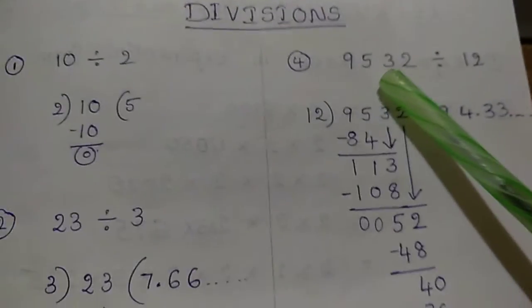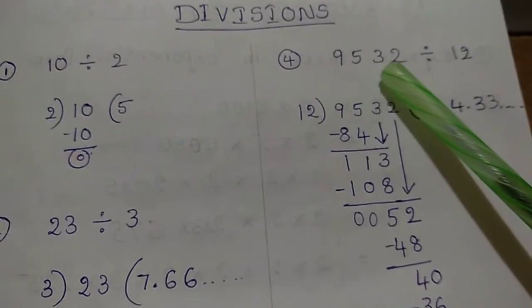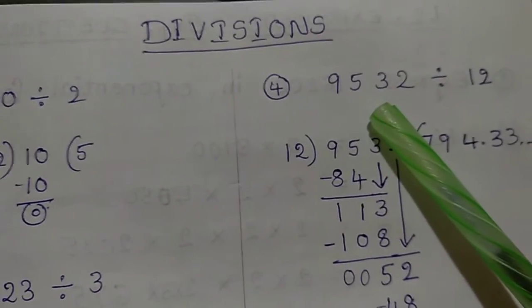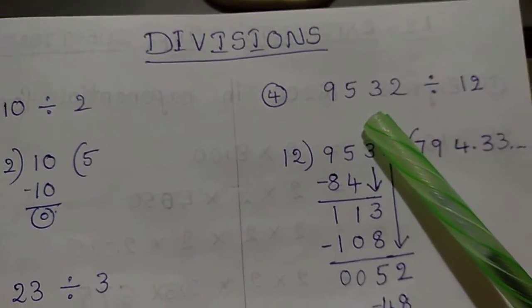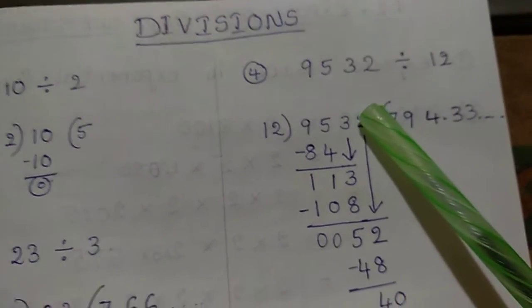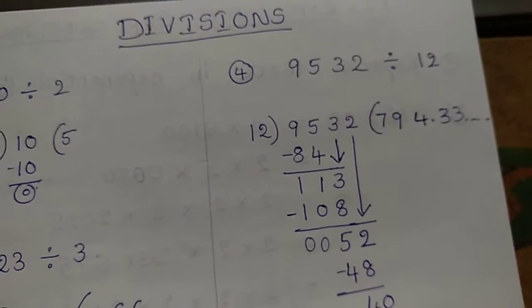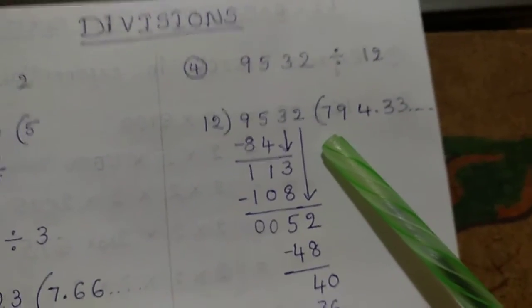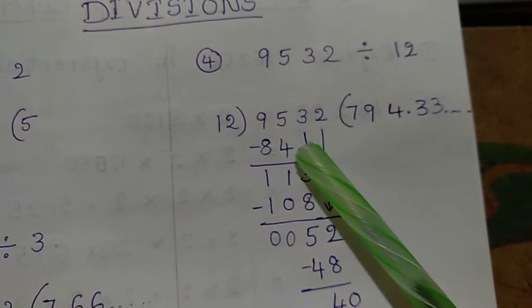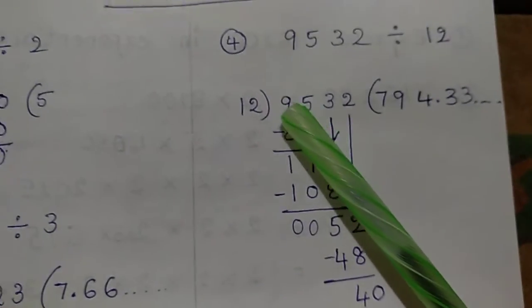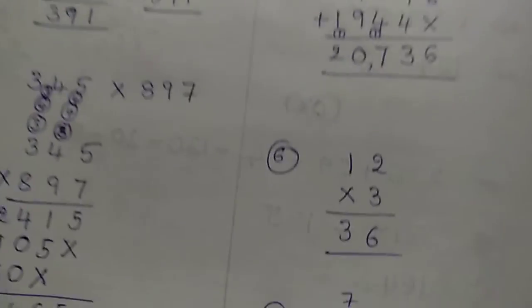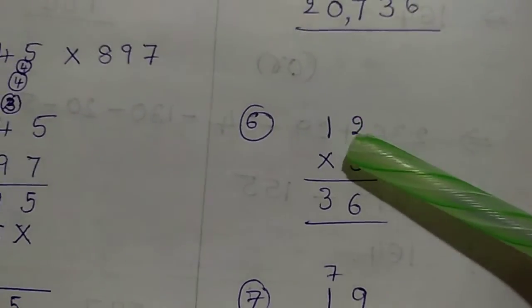Next, we have 9532 divided by 12. This one is a struggle. Now we are able to take the first digits. Remember the number to bring down. What happens in the next step? This is the 9 times table. I mentioned the previous video, but I am going to use the 12 times table.